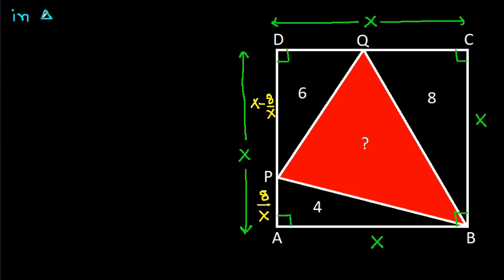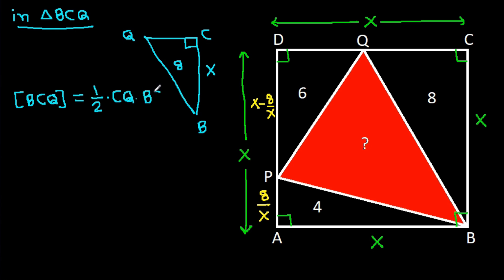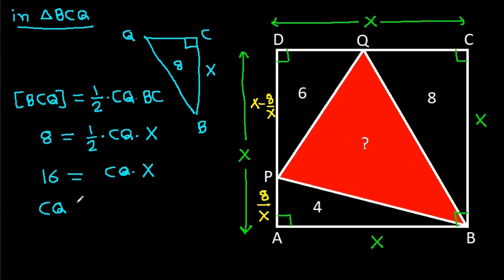Now in triangle BCQ, BC is X, this angle is 90 degrees, and area of BCQ is 8. So area of BCQ = (1/2) × base CQ × height BC = 8, which gives (1/2) × CQ × X = 8, so CQ = 16/X.